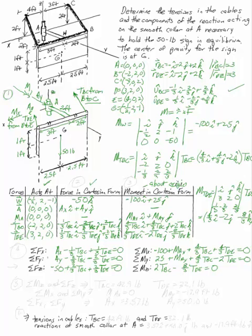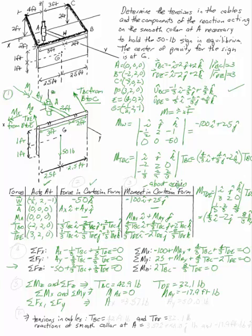We now have six equations and six unknowns. Using the last two moment equations — sum of moments in Z and the k moment equation — with two equations and two unknowns: TBC = 42.9 pounds and TDE = 32.1 pounds. Substituting back: MAX = 0, MAY = -17.9 ft·lb, AX = 3.57 pounds, and AY = 50 pounds.